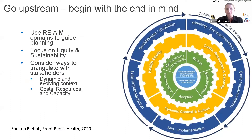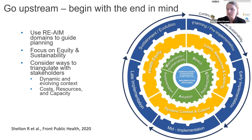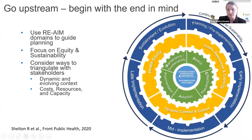Go upstream and begin with the end in mind — using RE-AIM domains to guide planning, not just as an evaluation framework but using it earlier on with stakeholders to guide the implementation plan, and potentially making midstream corrections. This paper with Shelton and colleagues described doing this with a focus on equity and sustainability. You've got your evidence-based intervention components and implementation strategies, your RE-AIM domains in the green, triangulating with stakeholders to think about equity, dynamic context and culture, cost and capacity, and a general focus on sustainability.